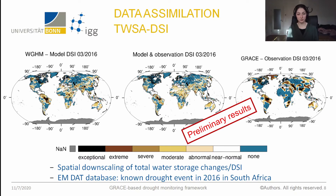Now we shift our framework towards the global extension. The previous results were done with the basin averages method, but now we are showing results for the four-degree GRACE assimilation. In our preliminary results you can clearly see that we can downscale GRACE — and now it is on a global range.